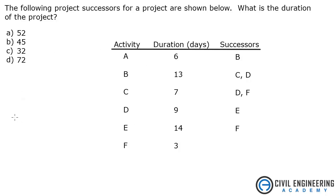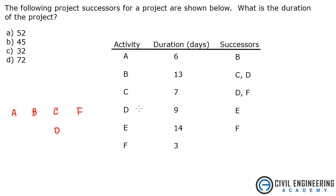Looking at this, we've got activity A and its successor is B, so we know B is sitting somewhere after A. With B, you have successors C and D. And for activity C, successors are D and F over here. And for D, the successor is E.